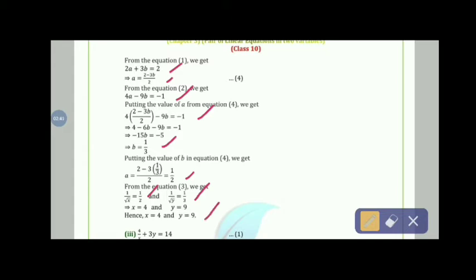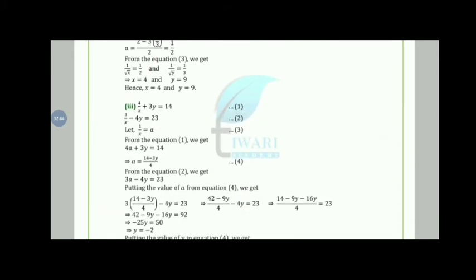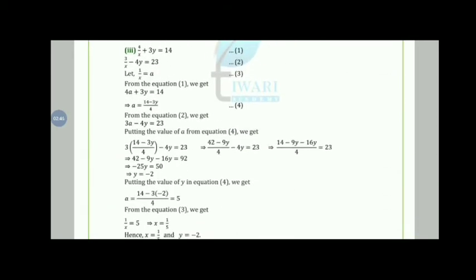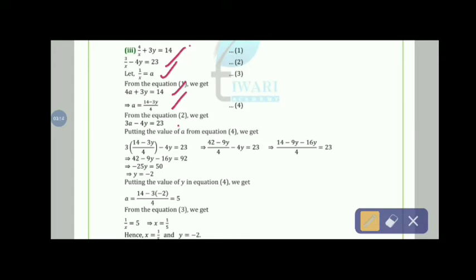Therefore x = 4 and y = 9. Moving to the third part: 4/(x+3y) = 14 and 3/(x−4y) = 23. Let 1/x = a. From equation 1: 4a + 3y = 14, so a = (14 − 3y)/4. From equation 2: 3a − 4y = 23.